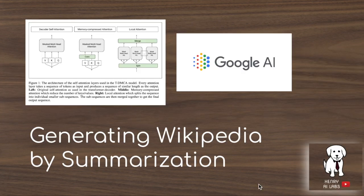Thanks for watching this video on 'Generating Wikipedia by Summarizing Long Sequences.' This experiment explores supervised learning of transformers with a massive dataset. Their Wikisum dataset contains 2 million input-output pairs where the input is all articles referenced in the Wikipedia page plus the top 10 search results of the topic, and the output is the original opening section of that Wikipedia article. The paper also introduces the decoder-only transformer and memory-compressed attention with local attention and strided convolution approximations.